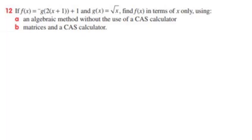Question 12 isn't going to be quite as nasty as you thought. Let's see what happens. We've got to find what f(x) is equal to, and we're told that it's going to be equal to negative g times 2 brackets x plus 1, plus 1.